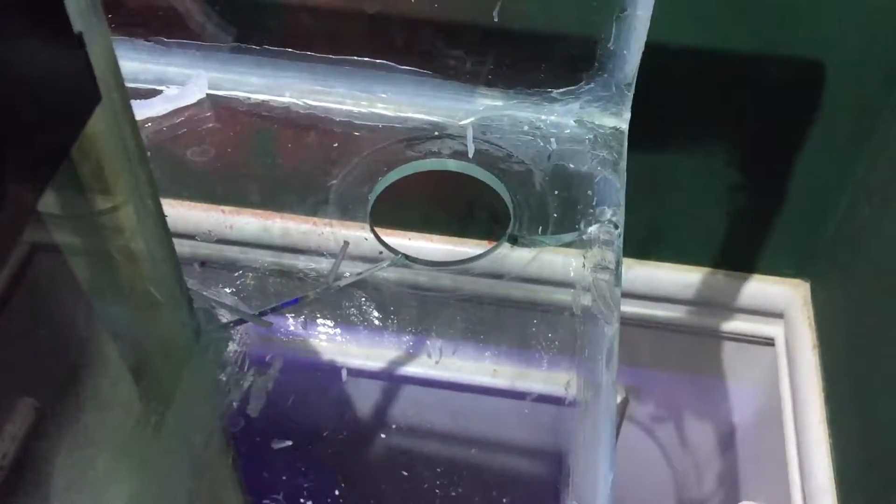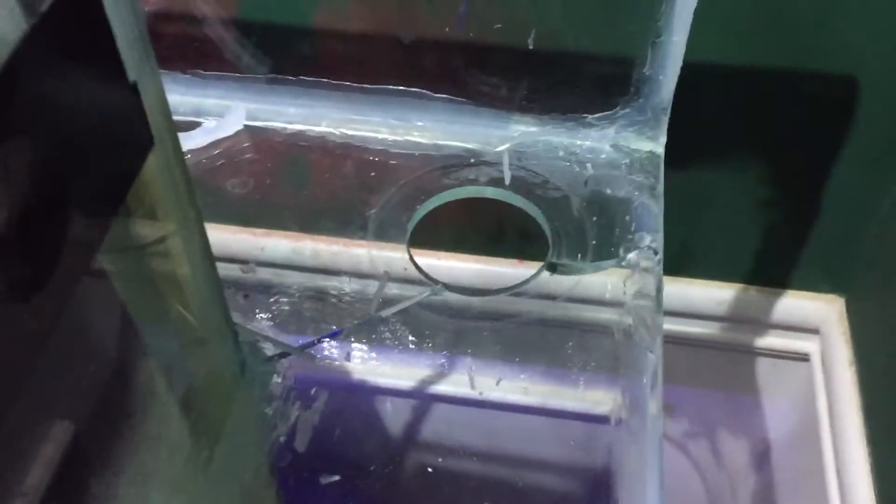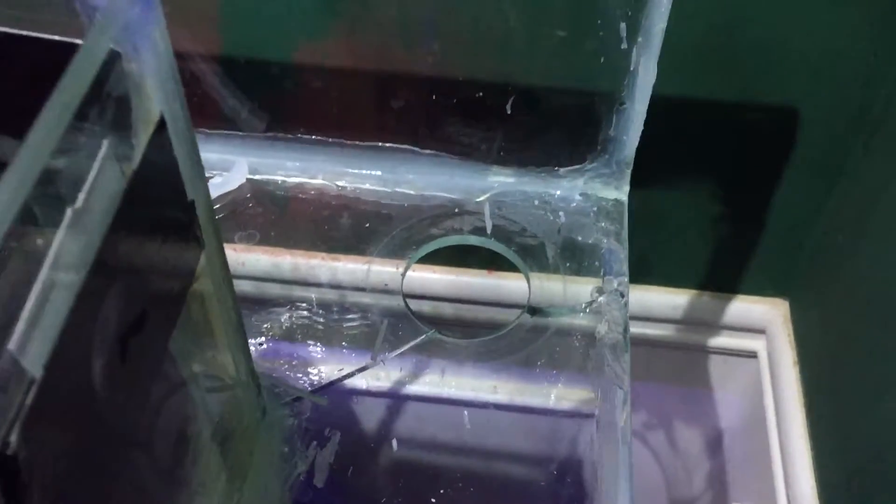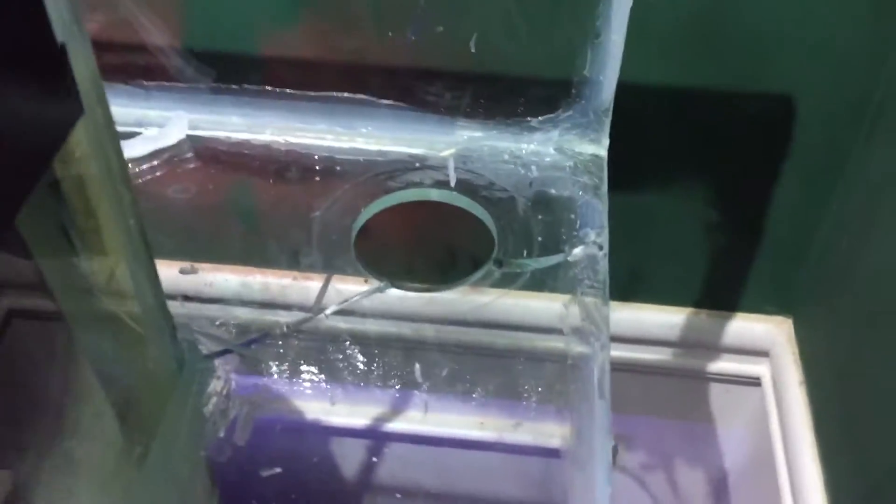Hi guys, I want to give you a quick update on the status of the sump and the filtration system. I messed up kind of badly. So I built this overflow box you see, it's a bean animal, there are three drains in it.